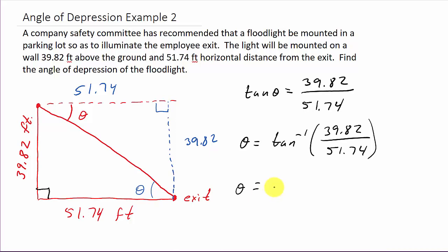And so, we would get 37 point, and I'm going to round it to one decimal, 37.6 degrees would be the angle of depression.